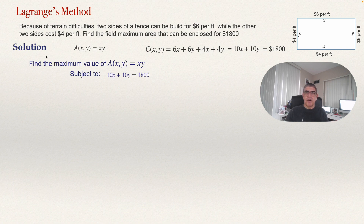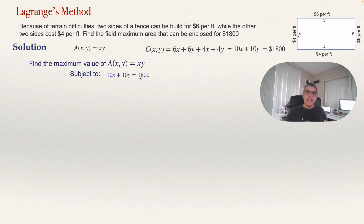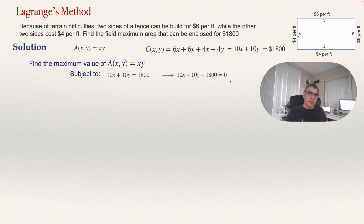So the problem is: maximize the area subject to the constraint that 10X plus 10Y equals 1800. For the Lagrange method, the constraint must be written with everything on one side equal to zero: 10X plus 10Y minus 1800 equals zero. That is how we write the constraint for this method.